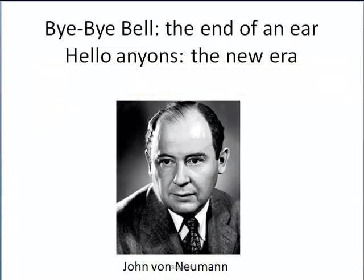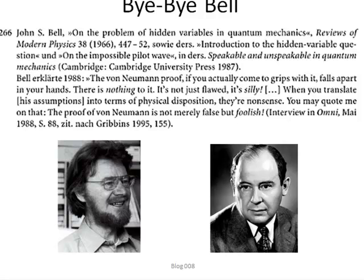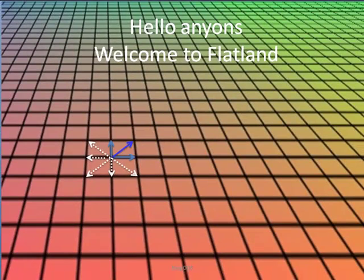Let's be reminded of what Bell said about von Neumann's error: 'The von Neumann proof, if you actually come to grips with it, falls apart in your hands. There is nothing to it. It is not just flawed, it is silly. When you translate his assumptions in terms of physical disposition, they are nonsense — so you may quote me on that. The proof of von Neumann is not merely false but it is foolish.' Von Neumann was no fool, and neither was Bell. Welcome to Flatland.